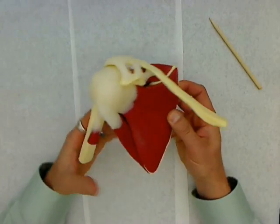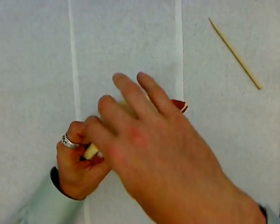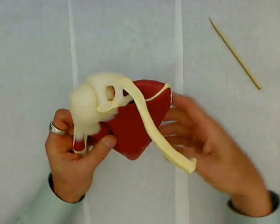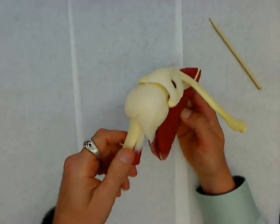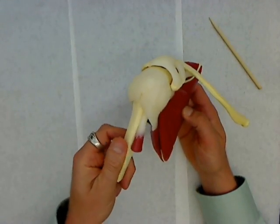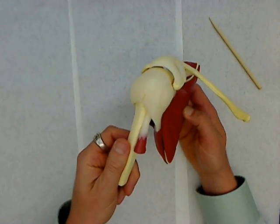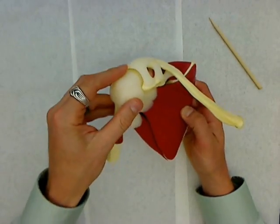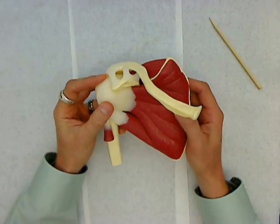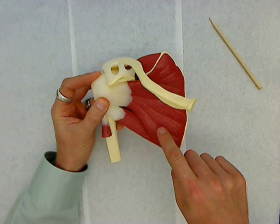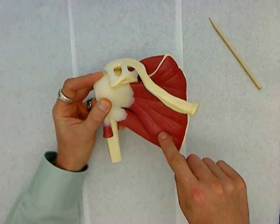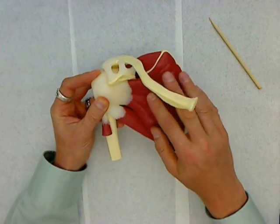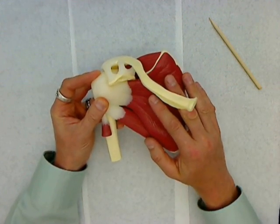I almost forgot — this is the rotator cuff. All of this white area that's covering the top of the humerus. The rotator cuff is a coming together of the tendons from all of the muscles that are attached to the scapula.